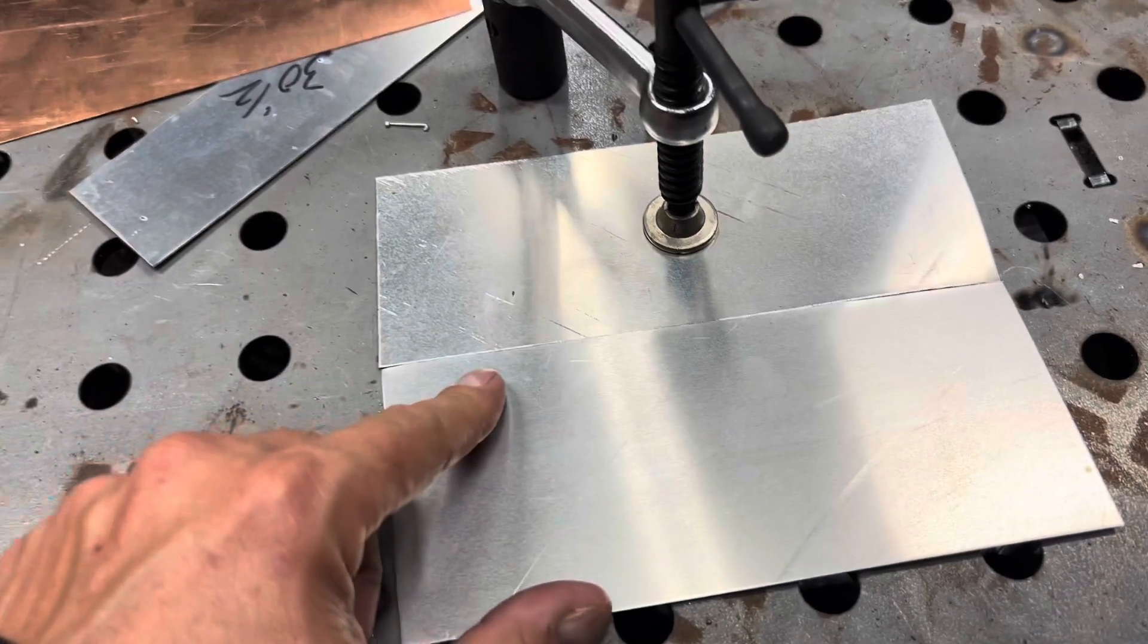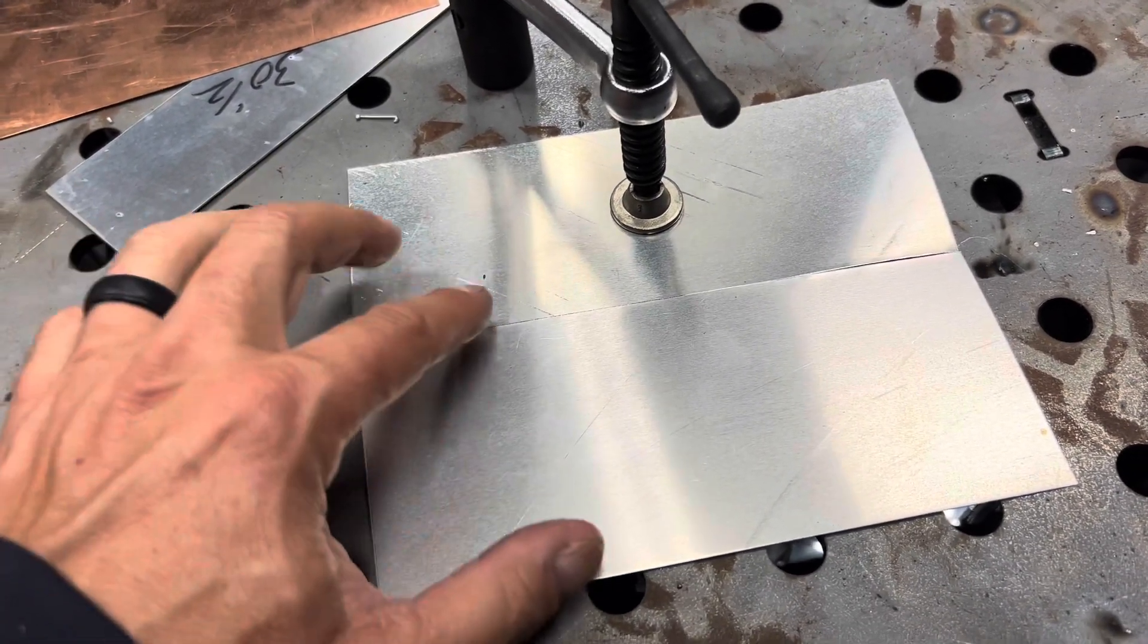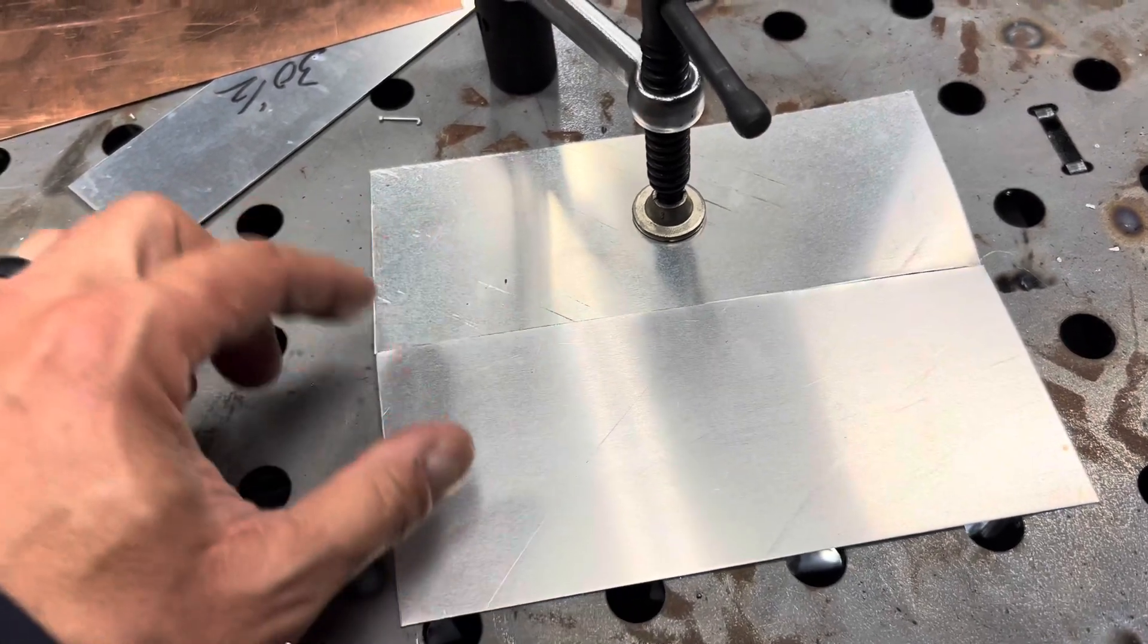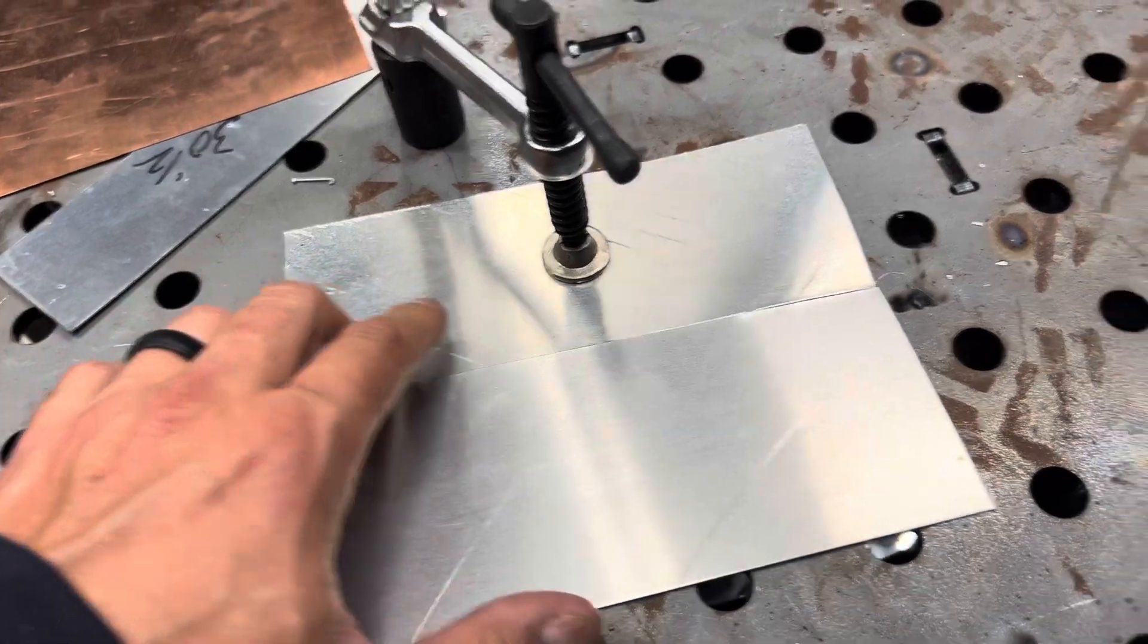In a butt joint like this with a push-pull gun, if you just continuously feed it down the line, I'll blow a hole in this. It's just too thin. So I will just have to stitch it as I go, and I'll show you that.